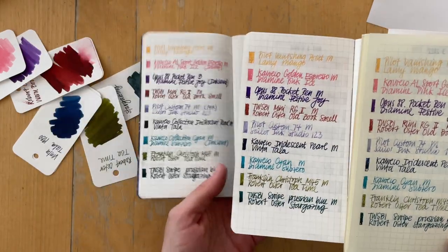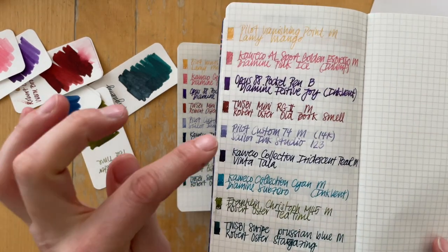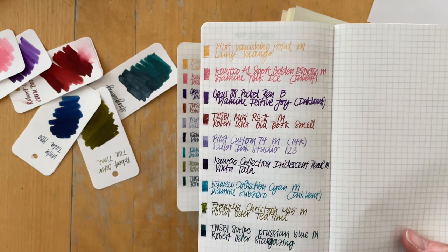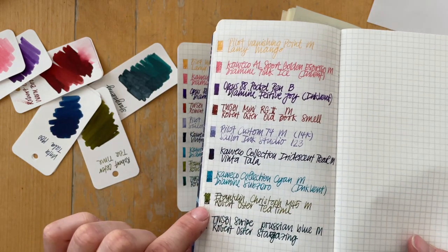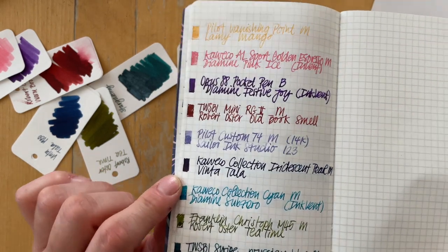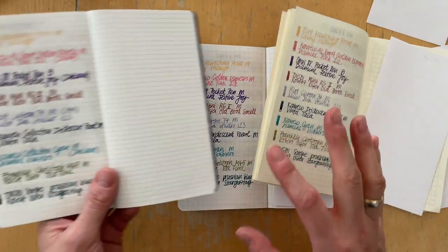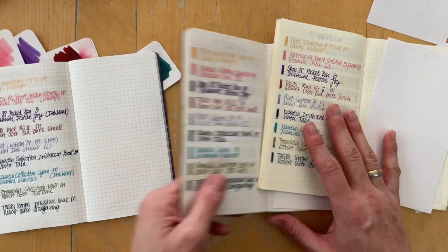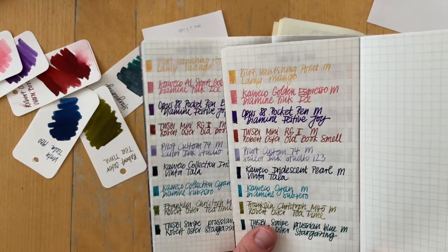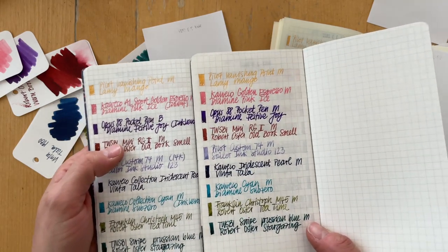So Tomoe river paper is my favorite. All of these inks look exactly how I imagined them to look. I love how the sailor ink studio comes out. The Lamy mango is not my favorite. I like the shading on the tea time. There is no shimmer left on the stargazing and the Vinta Tala seems to be really like evaporating a lot of water and darkened a lot here. The Lamy mango comes out a little bit better. All of the inks are more vibrant, bolder, the strokes of the nibs look bolder as well.